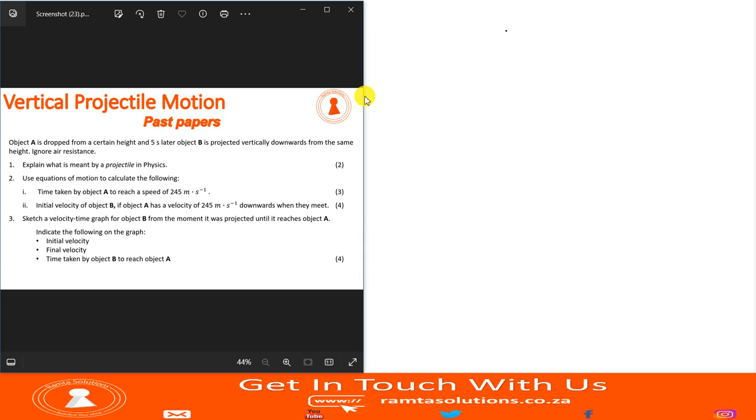So let's proceed now. It says object A is dropped from a certain height and five seconds later, object B is projected vertically downwards from the same height. Ignore air resistance.